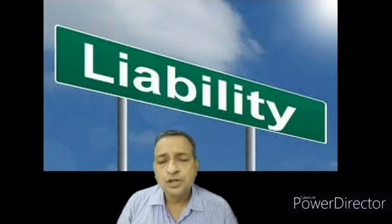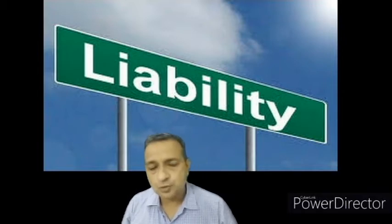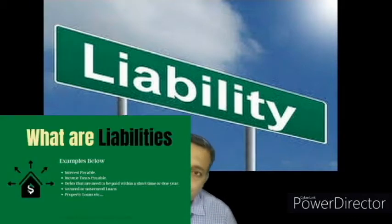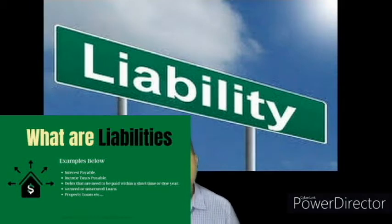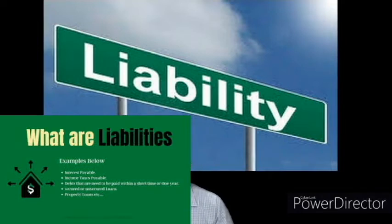For example, goods purchased on credit by a businessman. We can say a loan taken by a businessman from a bank, any institution, or on a personal basis. The business has a loan to a bank, person, business house — goods purchased on credit. Liabilities are the claims of creditors against the business enterprise.